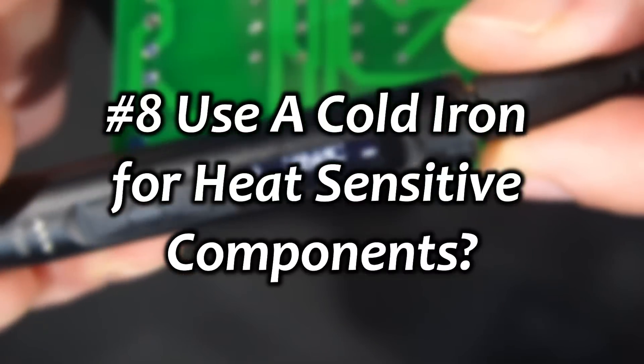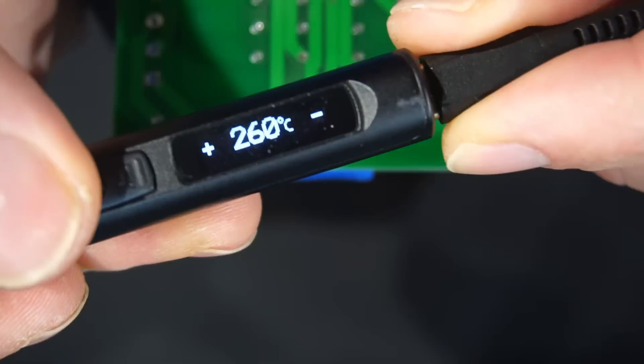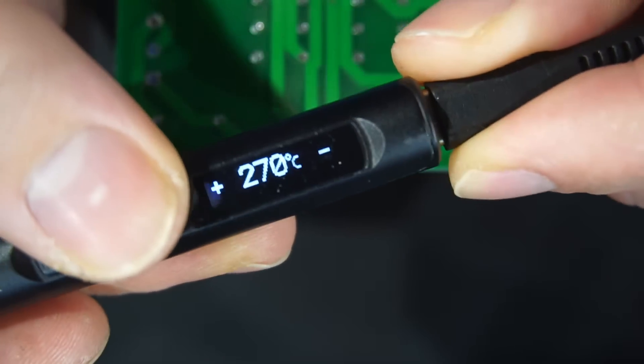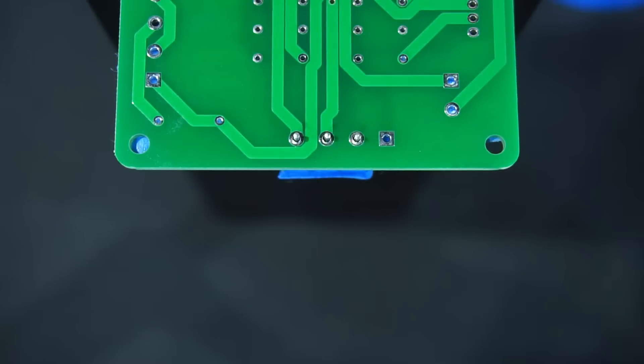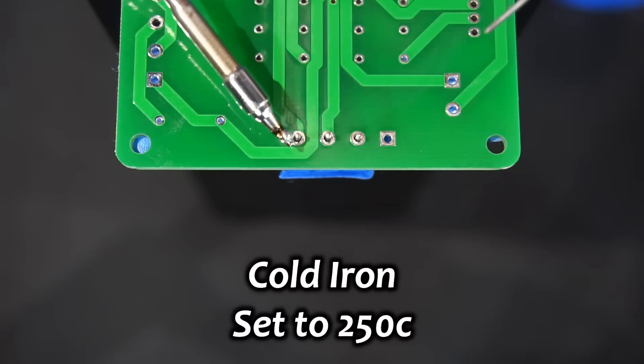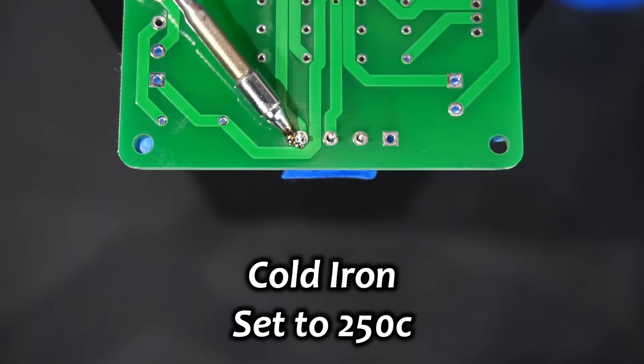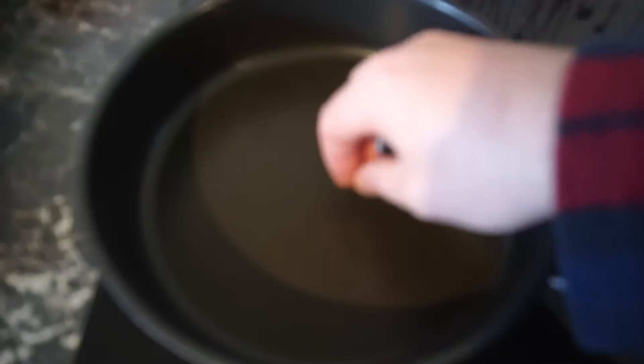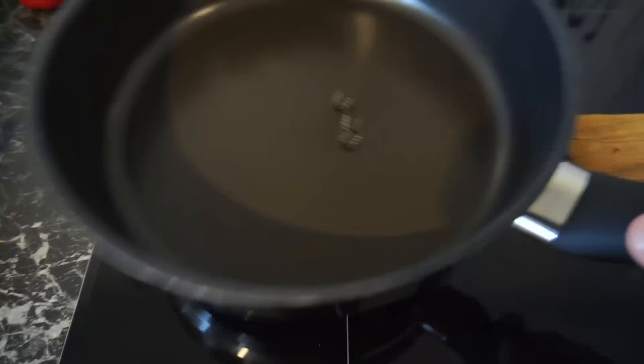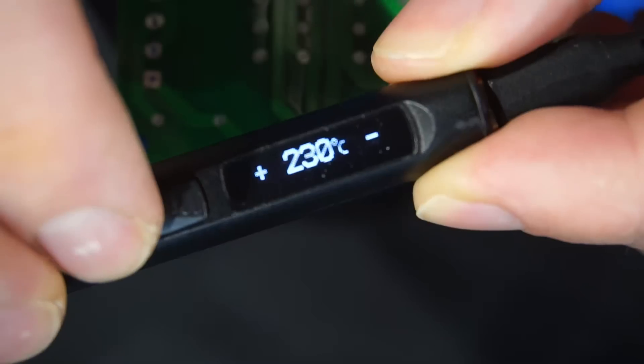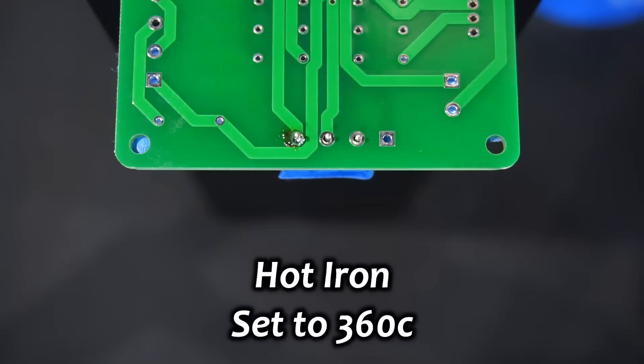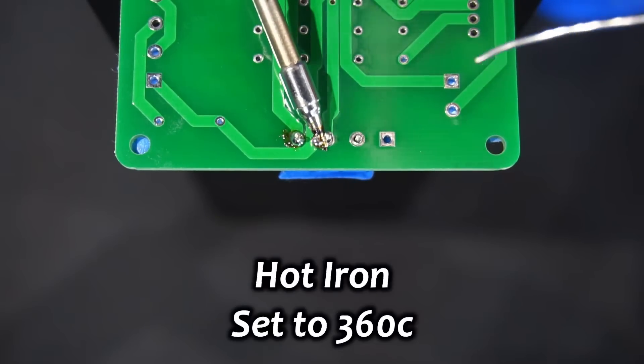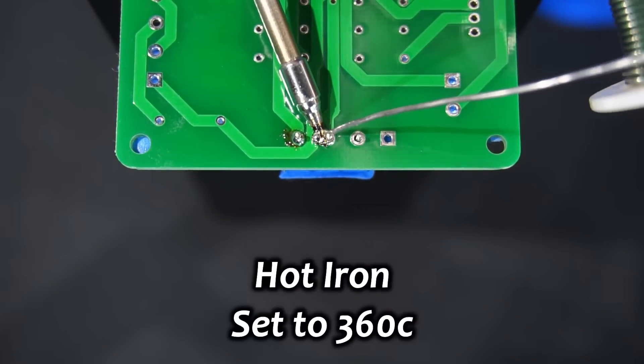Use a cold iron for heat sensitive components. Some electronic components can be very heat sensitive and you might think it's better to use a cold iron in this case, but you'd be wrong. A cooler iron temperature can mean you have to leave your iron on the connection for longer than normal, slowly roasting your ICs until they're medium rare. It's actually better to use a hotter iron. This way you are able to quickly solder the connection and keep heat soaking the component to a minimum.